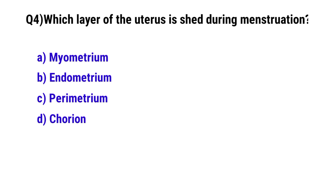Question No. 4: Which layer of the uterus is shed during menstruation? The correct option is B: Endometrium.